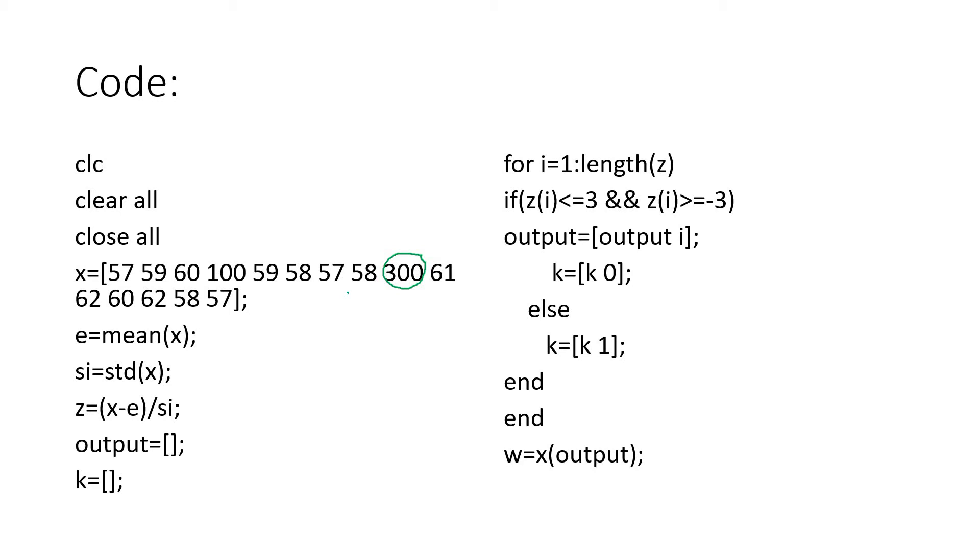Here you can see this particular data 300 is raised, and all are within 100 only, so there is a possibility that this data is an outlier. Now we are calculating the mean and standard deviation, and we are calculating the z-score, that is z = (x - e) / s, which is x minus mu by sigma. Then we are making one output array to store our index which are not outliers.